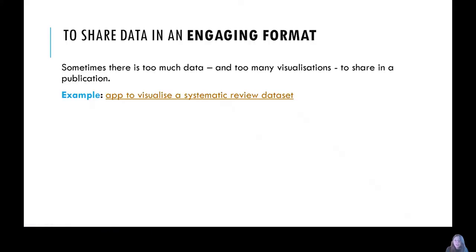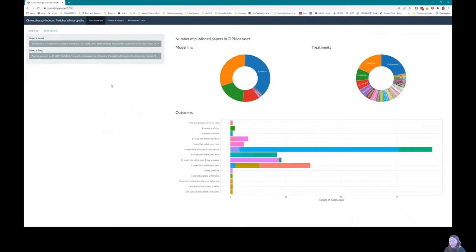If you conduct large systematic reviews and meta-analyses, you'll know that you typically generate quite a lot of data, and sometimes in a publication you can't really put all that data in there or visualize it all in the way you might want to. Also, once you come to publish your research, you ideally want to be sharing it somewhere accessible for others to reuse — rather than just putting it in CSV files in a repository, we wanted to share it in a way that was more engaging for the research community. This is an example from a review of animal models of neuropathic pain, where they induce neuropathic pain in animals and then try to treat it using various treatments.